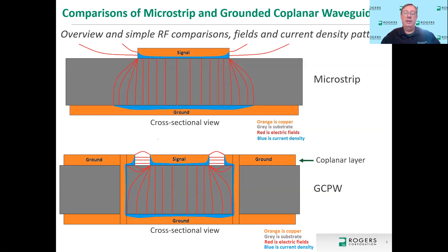For the Grounded Coplanar Waveguide, you see the same thing: coupling fields between the ground-signal-ground, and current density along those sidewalls. However, that current density can change if the signal conductor is trapezoidal — it would cause the current density to shift down, more focused at the base at the copper-substrate interface. Also, if you have final plated finishes, you now have four areas that could be affected with GCPW. Same with solder mask: if solder mask is applied, you have more fields fringing or coupling through that solder mask.